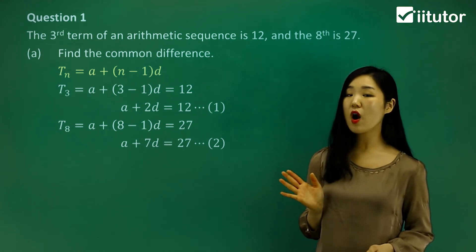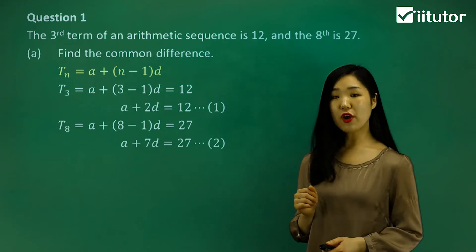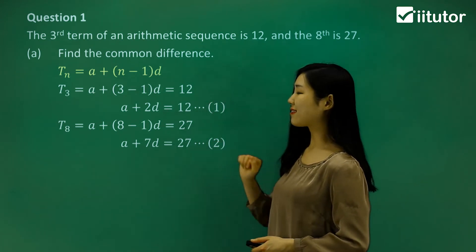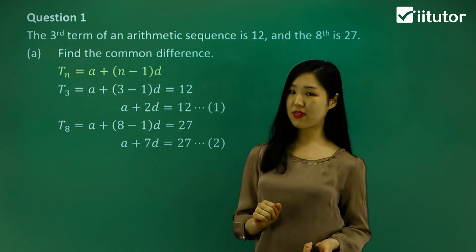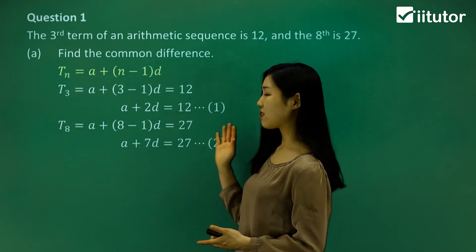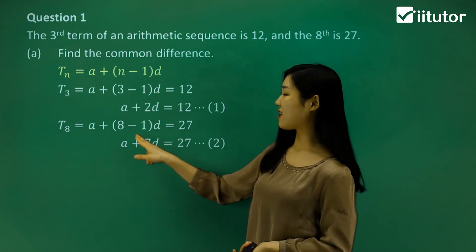Now what we want is the common difference. So I have to solve this simultaneously to find d. I'm going to use the elimination method because if I subtract, the a's will be gone. It will be eliminated.